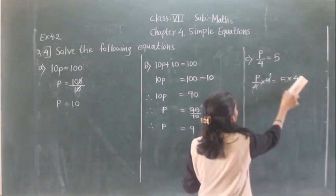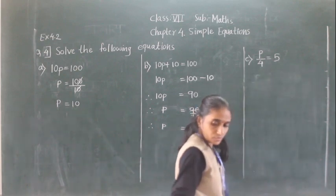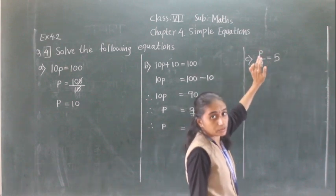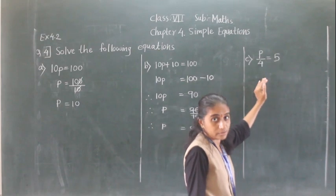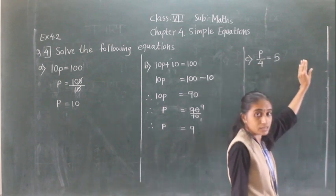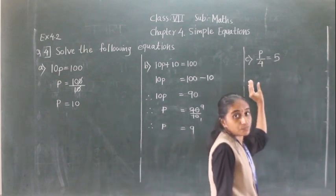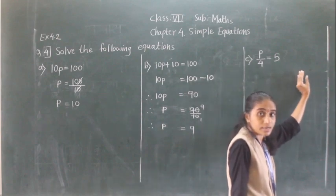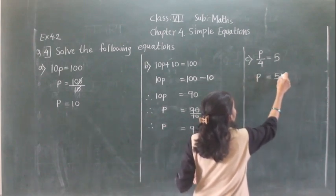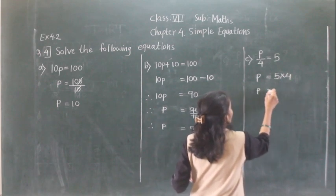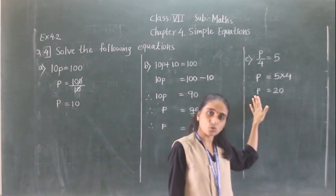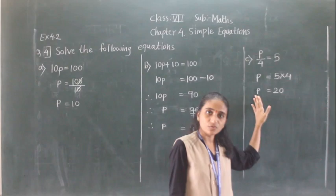Now solving the same equation p/4 = 5 using the transposing method. The operation here is division. We transfer 4 to the right-hand side, where it becomes multiplication. So p is equal to 5 multiplied by 4, giving p = 20. This method is quite easy — you can use whichever method works best for you.